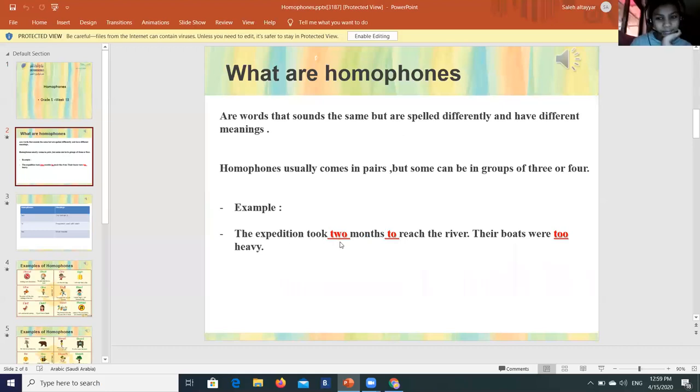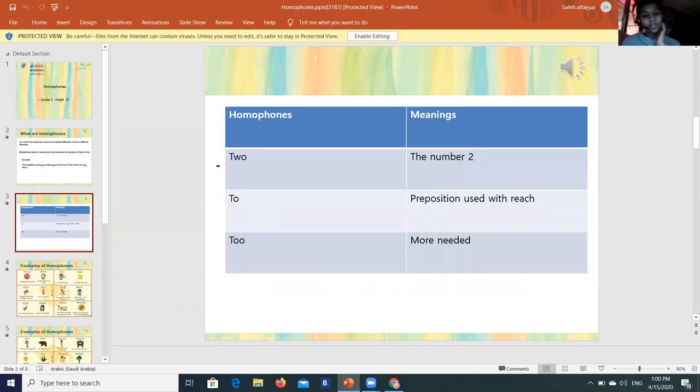Example: It took two months to reach the river. Their boats were too heavy. 'Two' is the number 2, 'to' is a preposition used with 'reach', and 'too' means more than needed.